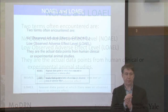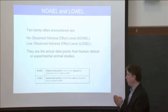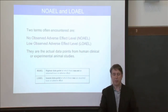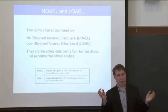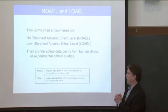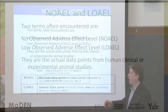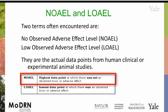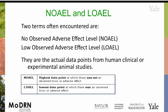Two terms you're going to need to know: NOAEL and LOAEL — No Observed Adverse Effect Level and Lowest Observed Adverse Effect Level. Crucial to understanding this is that they are actual data points. That becomes important because there can be wide gaps, orders of magnitude gaps, at different dose levels. NOAEL is the highest data point at which there was not an observed toxic or adverse effect. LOAEL is the lowest data point at which there was an observed adverse or toxic effect.